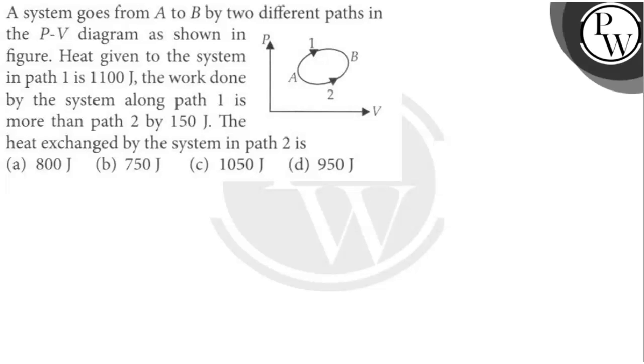Hello, let us read this given question. The given question says that a system goes from A to B by two different paths in PV diagram as shown in the figure.